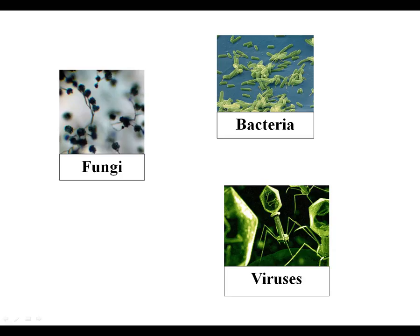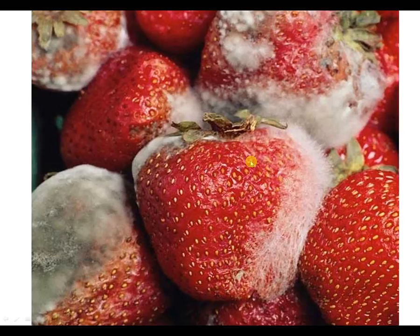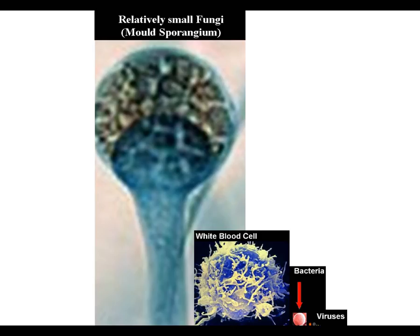Bacteria, fungi, and viruses are all microscopic, but even then they vary drastically in size. Here for instance is one that, strictly speaking, isn't really microscopic. This is a type of fungus, it's a mold. You can see the mold growing here on some strawberries — that fuzzy mold is actually a type of fungus. Whereas bacteria and viruses tend to be much smaller and are always microscopic.